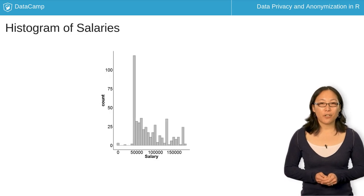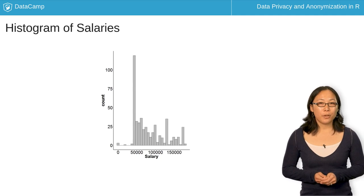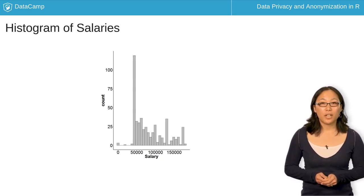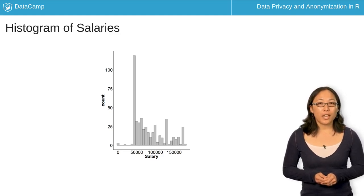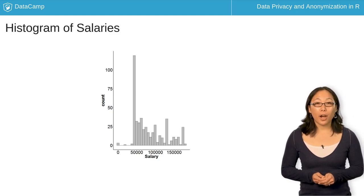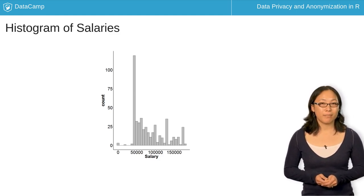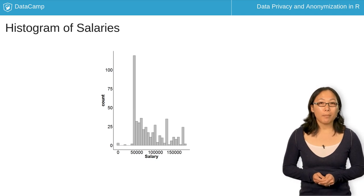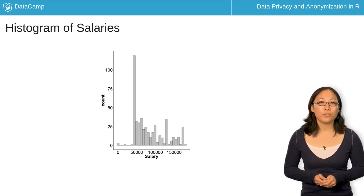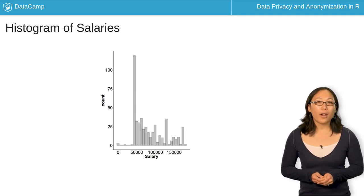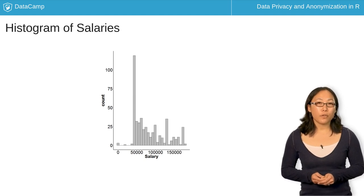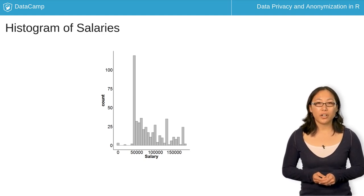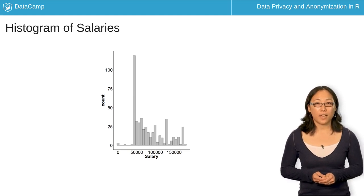This histogram was generated using ggplot2. We see that there are quite a few people who make around $50,000, and a decent amount that make over $100,000. We could apply generalization or make broad categories in these splits. As for top and bottom coding, you want to apply bounds to reduce the number of people who are outliers, because they will be easier to identify. For instance, there are very few people who make over $165,000 or under $50,000.